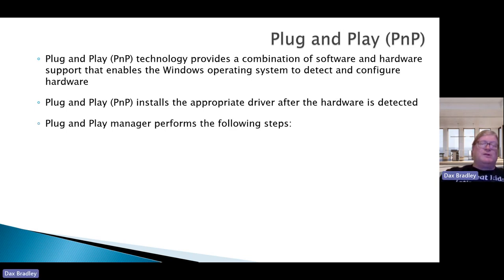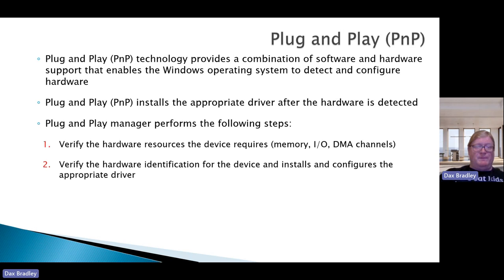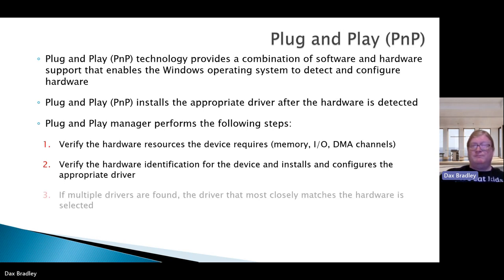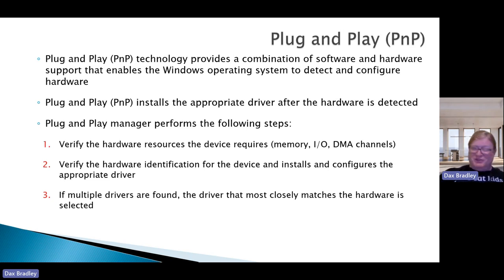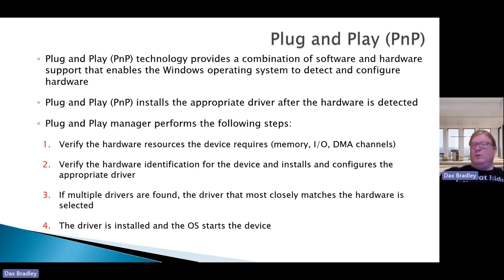The Plug and Play manager works by performing the following steps. First, verify the hardware resources the device requires — the memory, IO, DMA channels, and so forth. Second, verify the hardware identification for the device and install and configure the appropriate driver. Third, if multiple device drivers are found, the driver that most closely matches the hardware is selected. Fourth, the driver is installed and the OS starts the device. Usually, even though this sounds like a lot, it happens fairly quickly — within seconds.